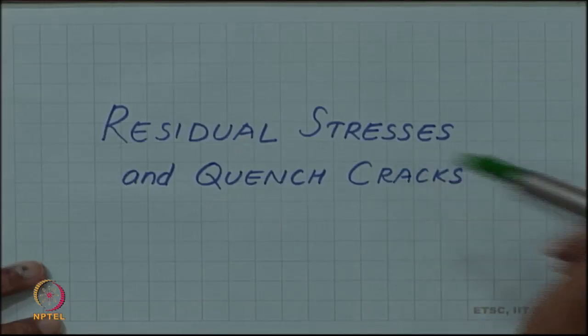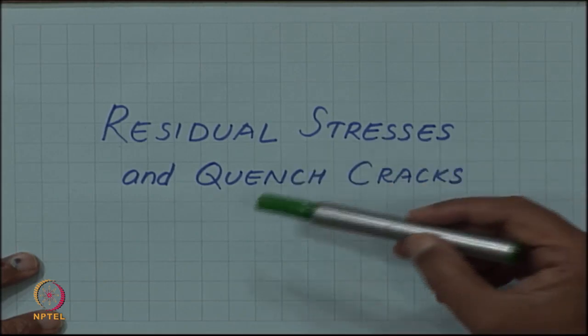One of the problems of quenching to produce martensite is generation of residual stresses, and sometimes it leads to quench cracks. So let us see why this happens.